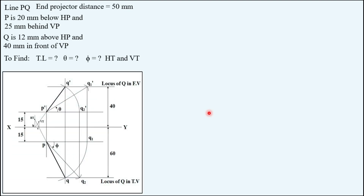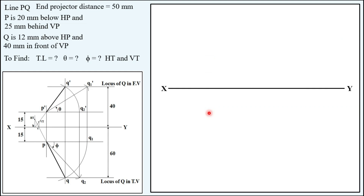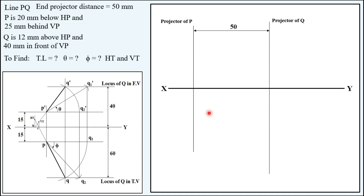Now let's draw the solution. Starting with the XY line, draw a vertical projector and name it as the projector of P. From this projector of P, take a horizontal distance of 50 mm and draw another projector, calling it the projector of endpoint Q. Endpoint P is in the third quadrant because it is 20 mm below HP and 25 mm behind VP. So from XY, 20 mm below gives the front view point P', and 25 mm above XY gives the top view point of endpoint P.